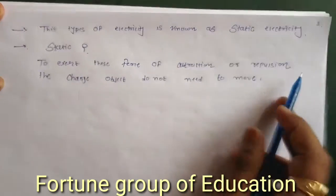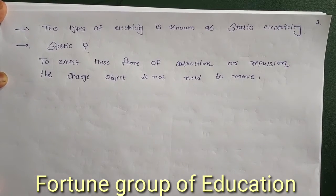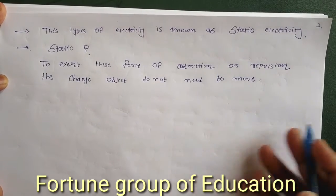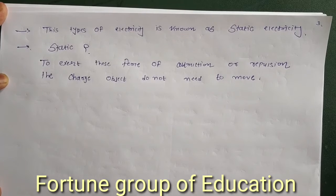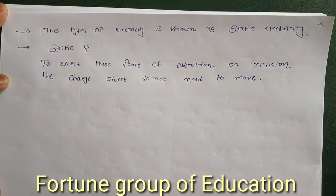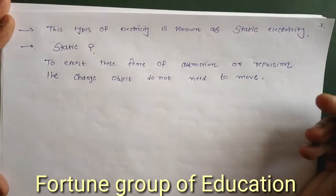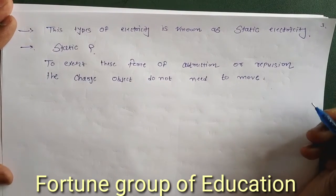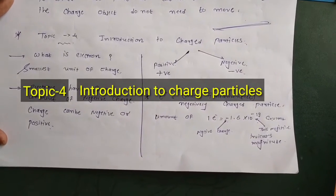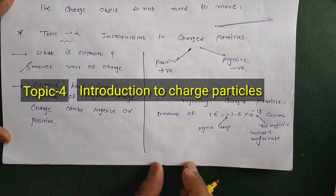This type of electricity is known as static electricity. Why do we call it static electricity? To exert this force of attraction or repulsion, the charged objects do not need to move. So this phenomenon is known as static electricity.